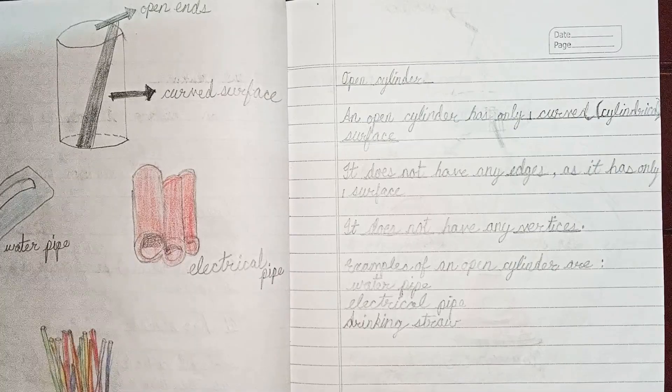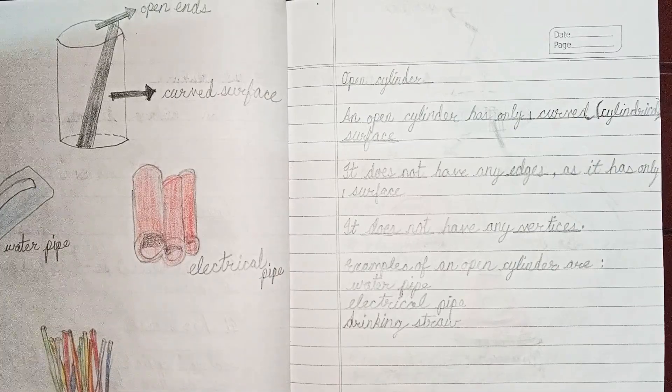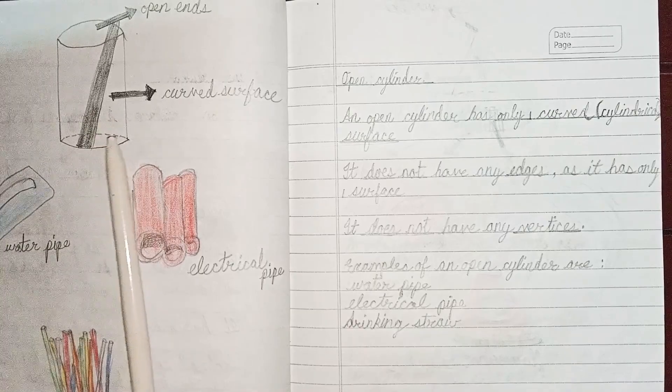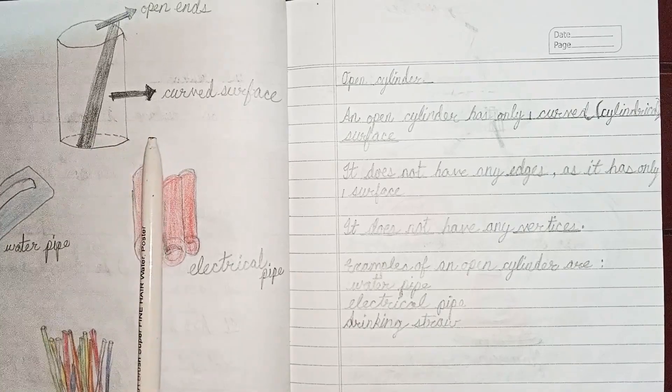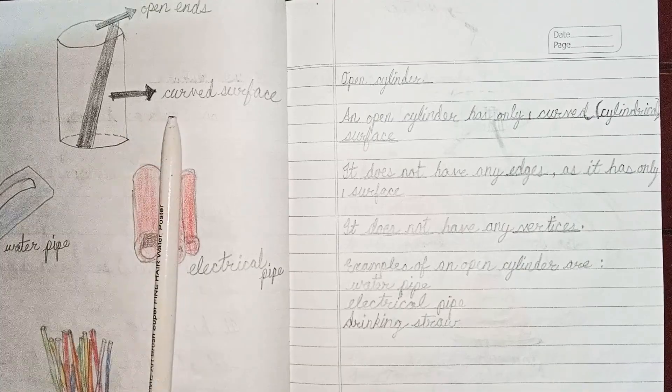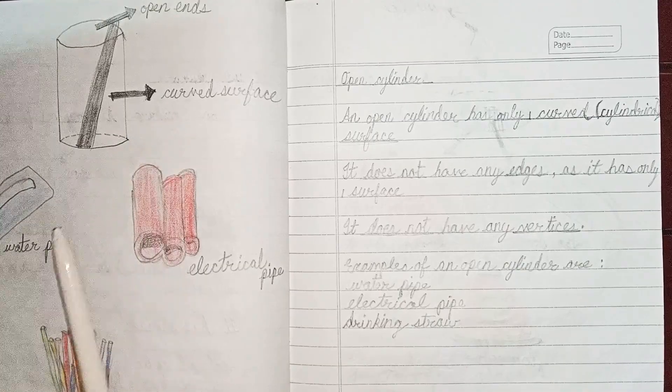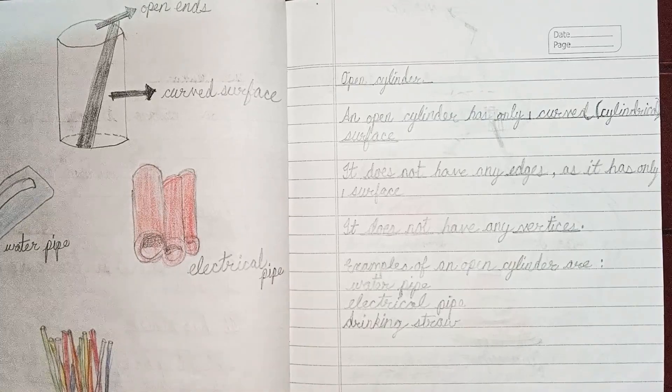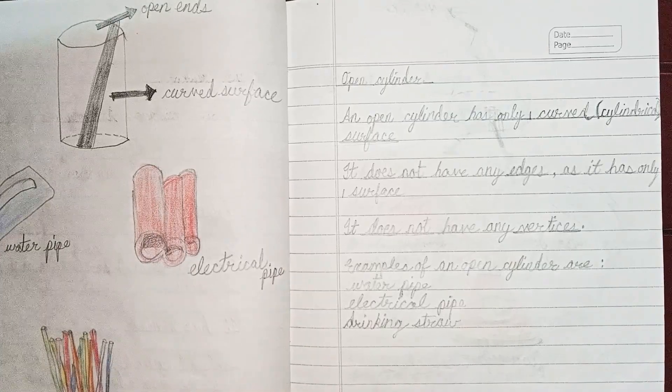Next one is open cylinder. An open cylinder has only one curved surface. It does not have any edges as it has only one surface. It does not have any vertices. For example, water pipe, electrical pipe, drinking straw - these are all open cylinder in shape.